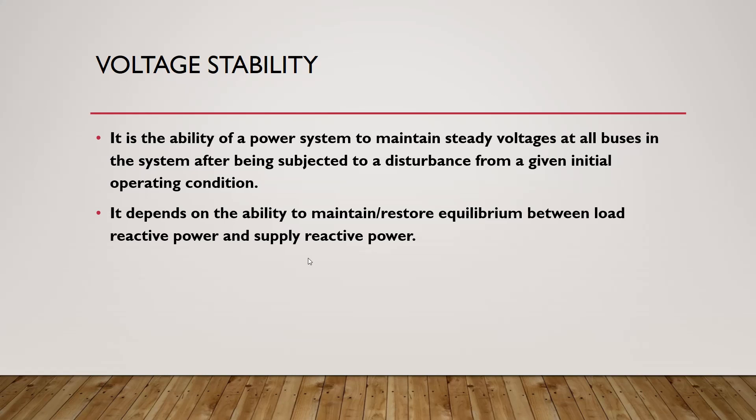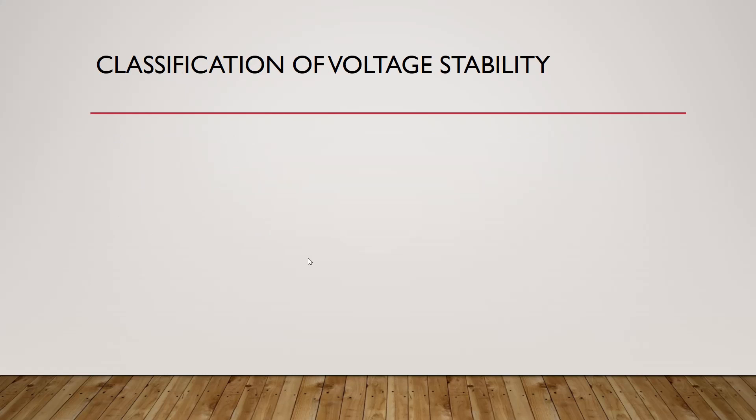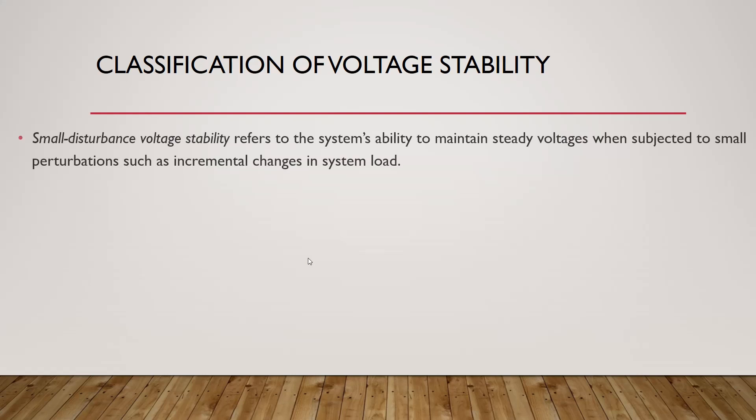Voltage stability can be classified into four categories. Number one is small disturbance voltage stability, which means our system should maintain a steady-state voltage when subjected to a small disturbance, such as incremental changes in system load — a small change in load or a change in mechanical power.